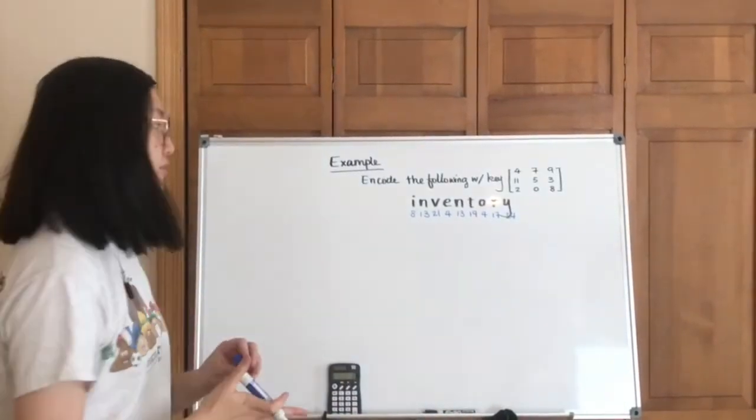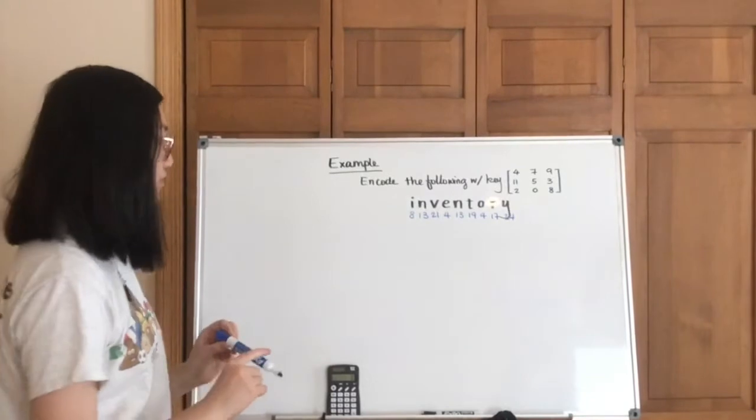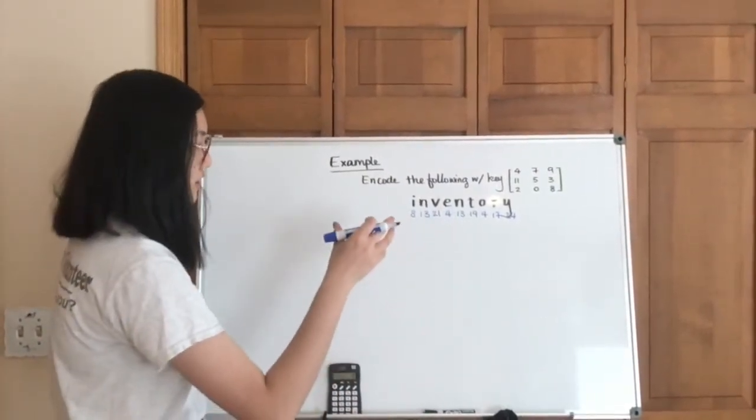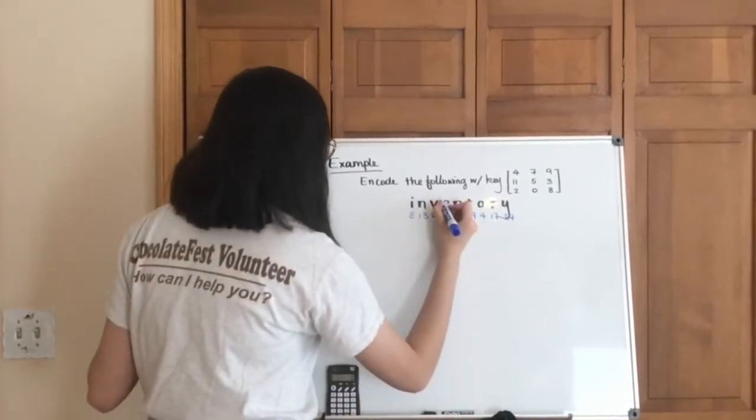And here's the first difference between 2x2 and 3x3 hill ciphers. Instead of grouping the letters into numbers of 2, we're going to group them by 3s.